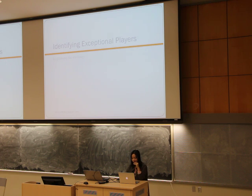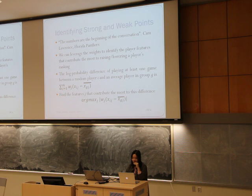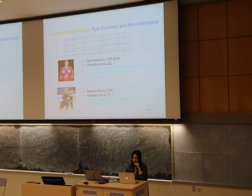Our model tree can also be used to identify exceptional players in the NHL. As one Florida Panthers executive said, the numbers are just the beginning of the conversation. We can leverage the weights computed by our model to identify the player features that contribute most to a player's ranking, and compute the log probability difference of playing at least one game between a specific player and an average player in his group. We found two underestimated players in our experiment: Kali Pieminski and Brent Marchant. Kali Pieminski was not ranked by the Central Scouting Service at all, and his overall pick was 222. However, he played over 100 NHL games and won a Stanley Cup in 2015, and also represented Canada in the World Championship.